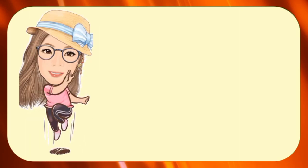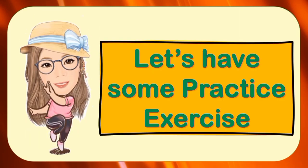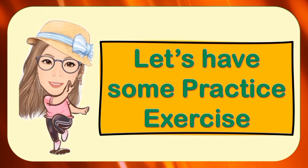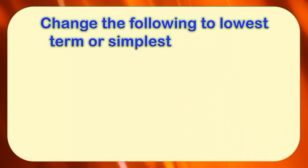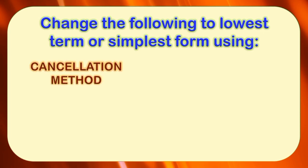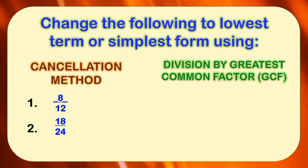Alright, children, let's have some practice exercises to apply what we have learned. Change the following to lowest term or simplest form. Using the Cancellation Method: number one, eight-twelfths; number two, eighteen twenty-fourths. Using Division by Greatest Common Factor (GCF): number one, fourteen-twentieths; number two, sixteen-twentieths.